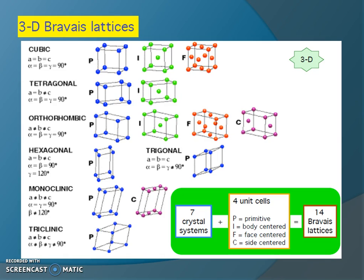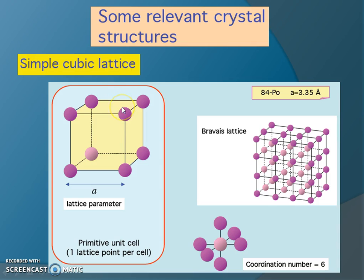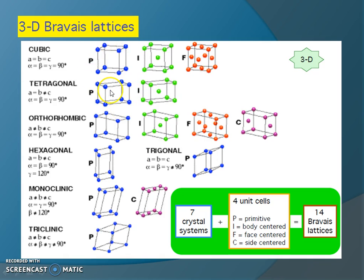Different unit cells exist: a primitive unit cell has atoms at the corners only; in a body-centered cell, there is one additional atom at the center of the cell; and in a face-centered cell, atoms are at the corners plus additional atoms at the middle of each face. In the cubic system, three types are allowed. In the tetragonal system, two types are allowed.